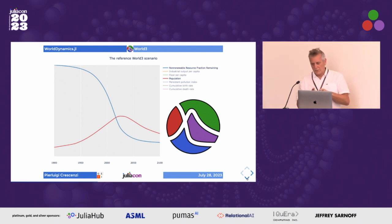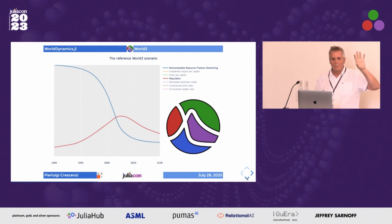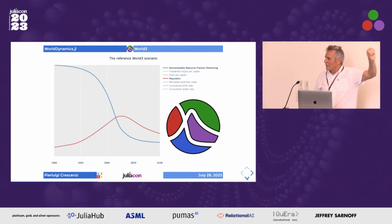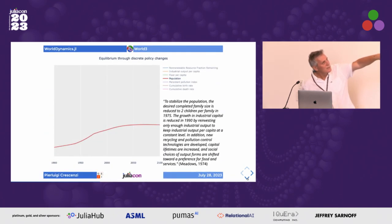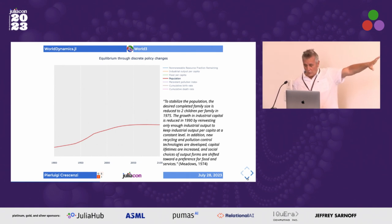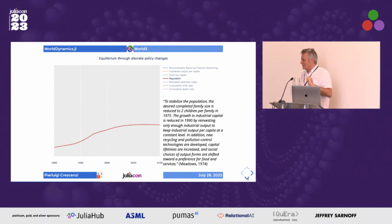This figure created the vast majority of critiques because basically the message was: watch out, if we don't do anything, we are going to collapse. This was popularized as the collapse theory. The image says we are going to collapse if we don't do anything, but in the book they also propose many policies which would allow avoiding the collapse. For instance, one is quite reasonable: the desired completed family size should be reduced to two children starting from 1975.